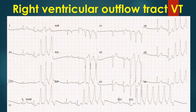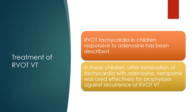RVOT VT occurring in repetitive runs has left bundle branch block morphology and inferior axis. In children with RVOT tachycardia responsive to adenosine, after termination of tachycardia with adenosine, verapamil was used effectively for prophylaxis against recurrence.